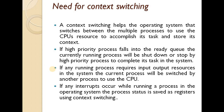If any interrupts occur while running a process, the process status is saved using context switching. Another condition is when the operating system wants to shift from user mode to kernel mode, or if there is a system call, we require a context switch. These are the four conditions where a context switch may be required.